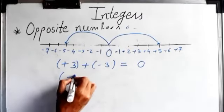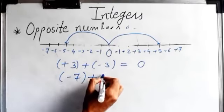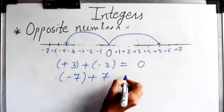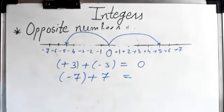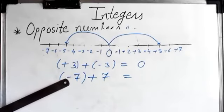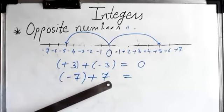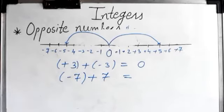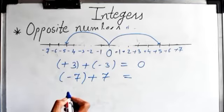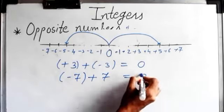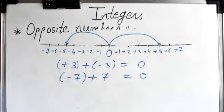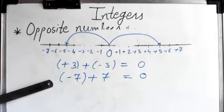One more example: minus seven plus seven. This seven has a minus sign, this seven has a plus sign. Ignore the signs, take the difference: seven minus seven equals zero. And zero does not have any sign.